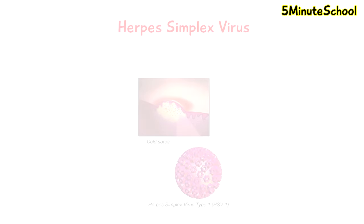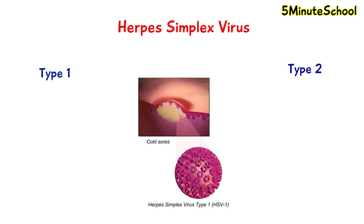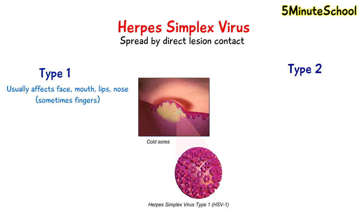Welcome to 5 Minute School. In this video we're going to be talking about the herpes simplex virus, which consists of two viral subtypes: type 1 and type 2. The virus is spread by direct lesion-to-skin contact. Herpes simplex type 1 usually affects the face, in particular areas of the nose, mouth, and lips.